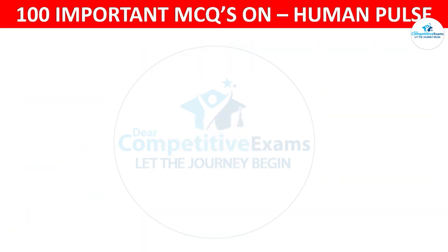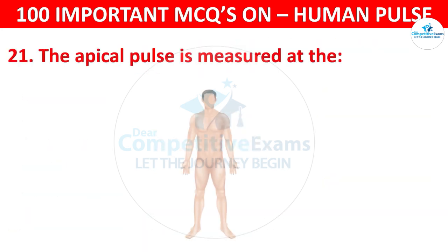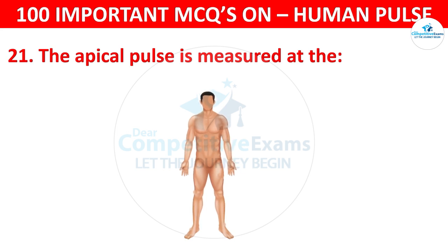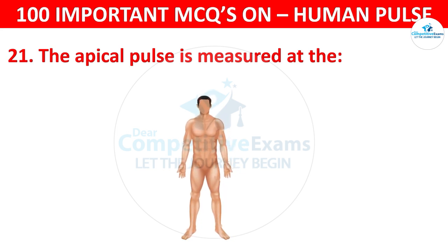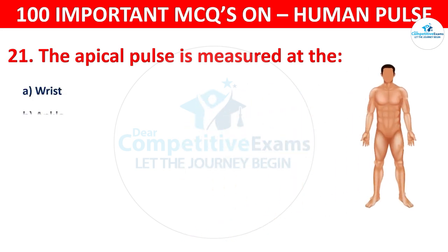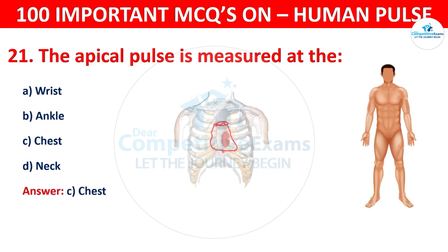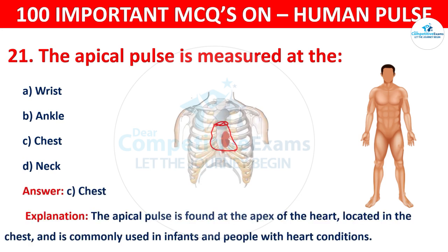Question number 21: The apical pulse is measured at the — your options are: Wrist, Ankle, Chest, or Neck. The correct answer is C, that is chest. The apical pulse is found at the apex of the heart, located in the chest, and is commonly used in infants and people with heart conditions.